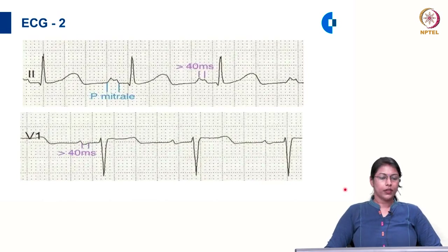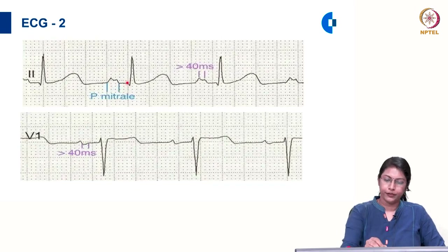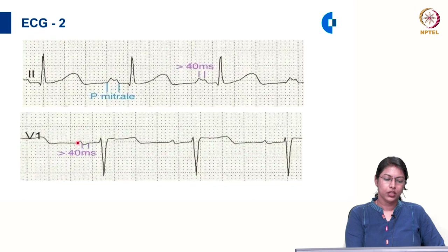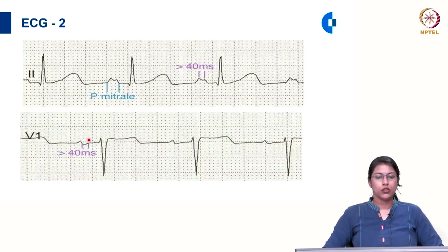In ECG 2, looking at lead 2 and V1: in lead 2, the P wave is bifid or notched, and between the two humps there is one small square. In V1, there is a positive component and a negative component which is increased in duration — prolonged more than 40 milliseconds. Calculating the P terminal force gives more than 0.04 millivolt-second, satisfying the Morris index. This ECG is suggestive of left atrial abnormality.